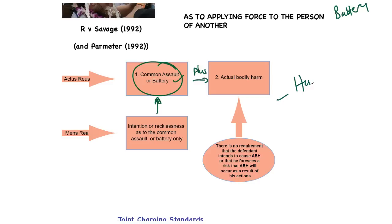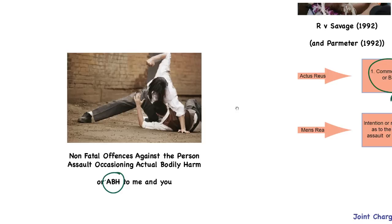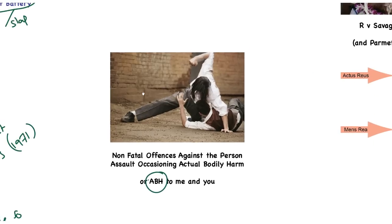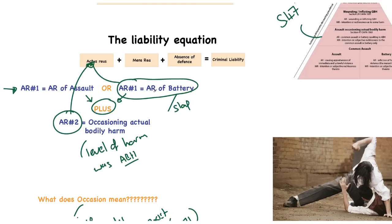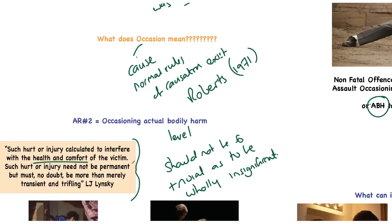What that means is: the actus reus for ABH is either common assault or battery that leads to actual bodily harm; the mens rea is only the intention or recklessness to commit the common assault or battery. There is no requirement that the defendant intends to cause ABH or foresees a risk that ABH will occur. Because of that, it is known as half mens rea. This is open to a huge amount of criticism as it goes against central tenets of English law, but just remember: the defendant only needs mens rea for the common assault or battery and does not have to necessarily foresee the actual bodily harm that resulted. The actus reus is simply either the actus reus of assault or battery plus a level of harm amounting to actual bodily harm — defined by Miller as hurt or injury calculated to interfere with the health and comfort of the victim, more than merely transient and trifling.